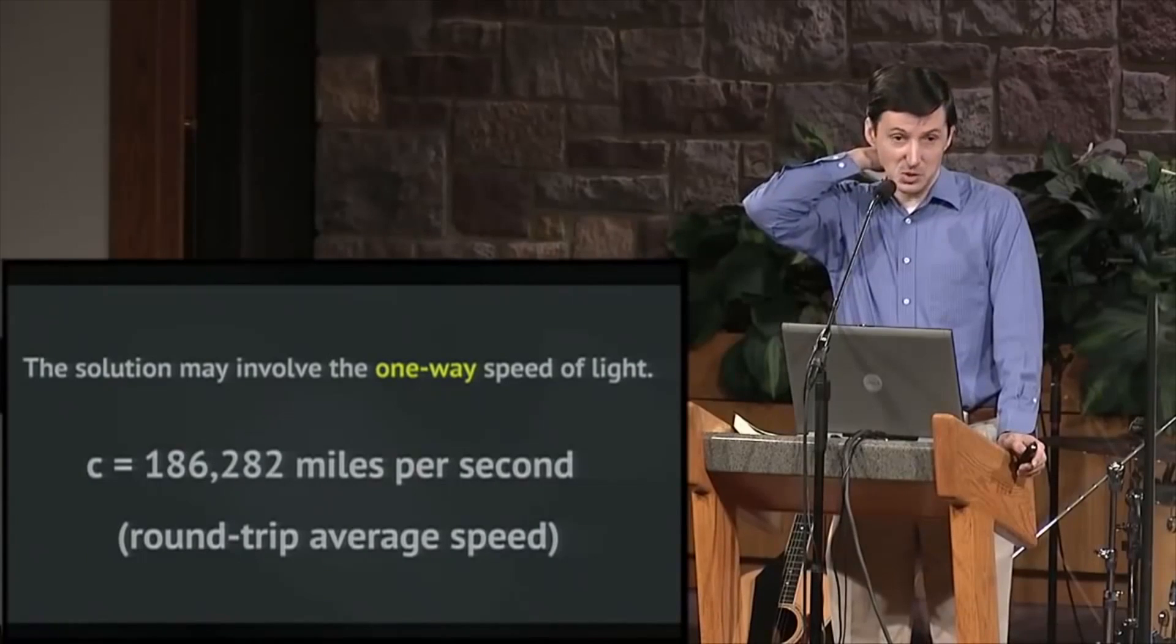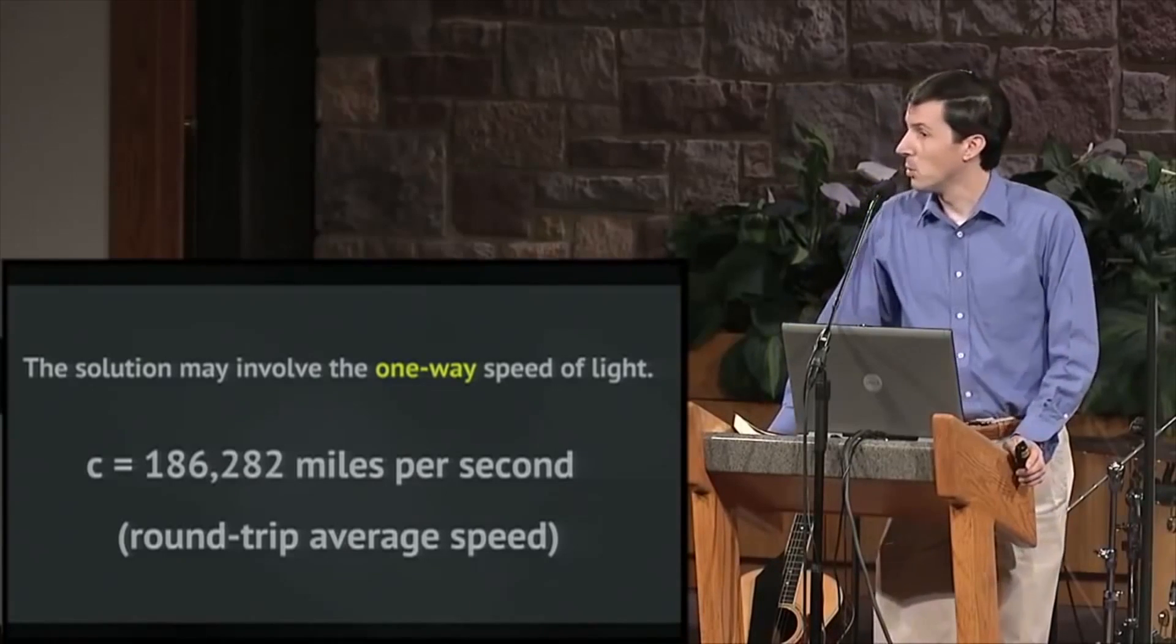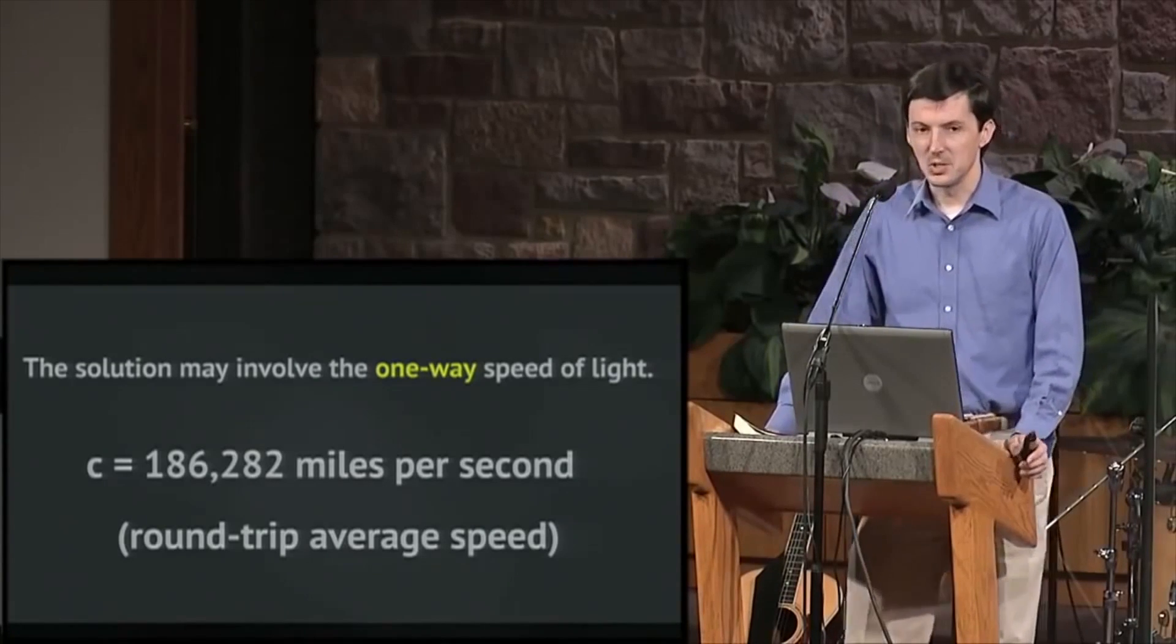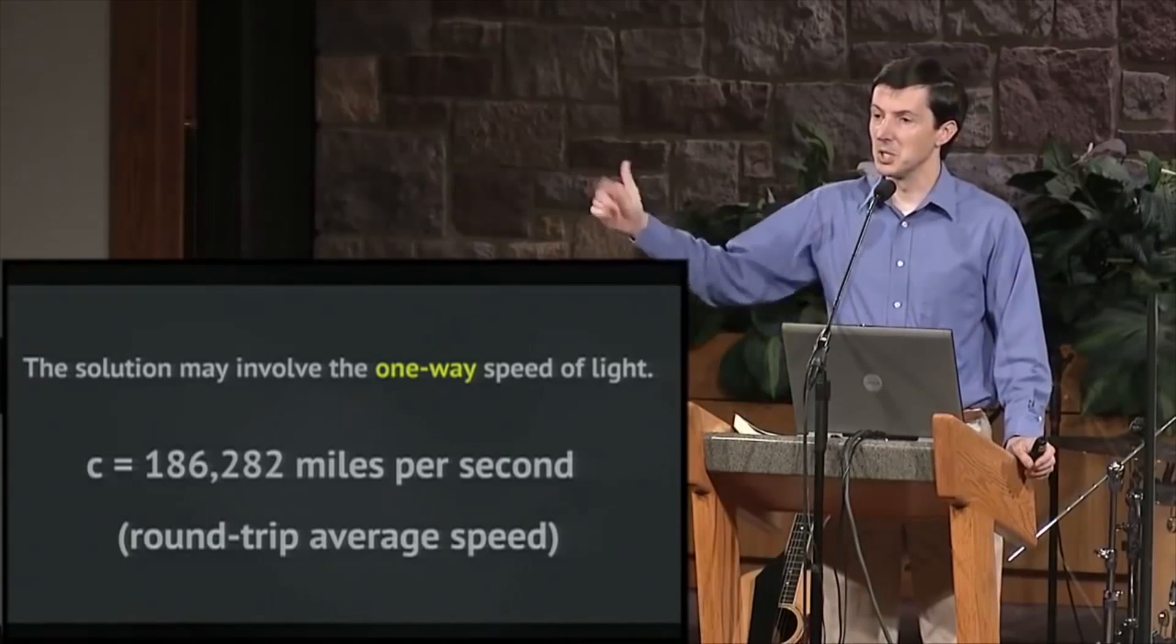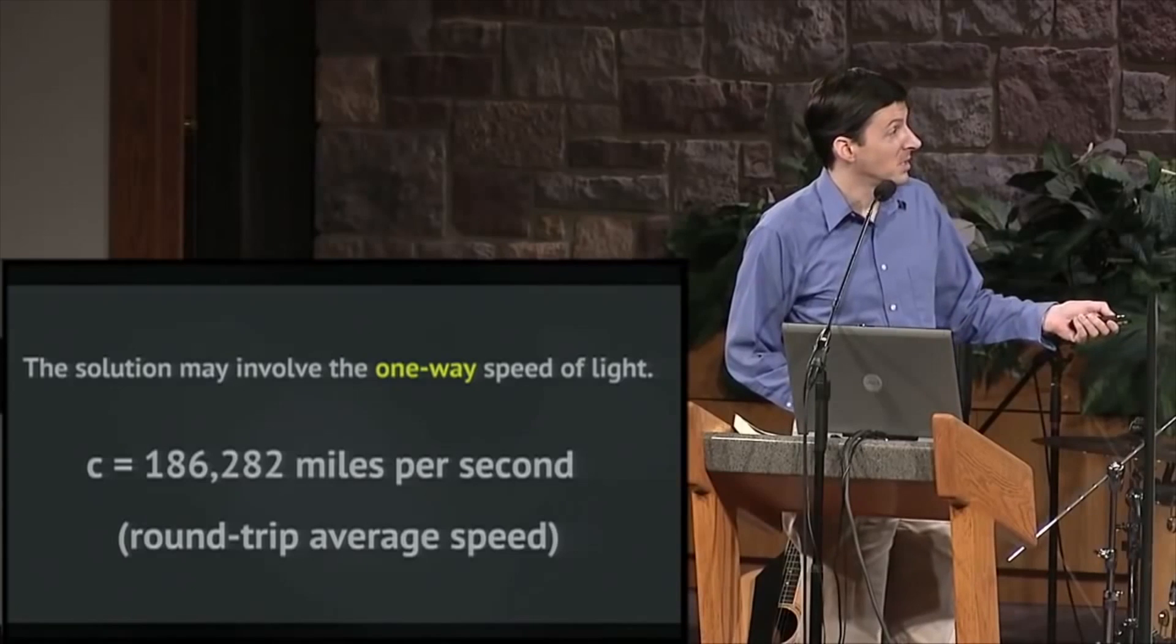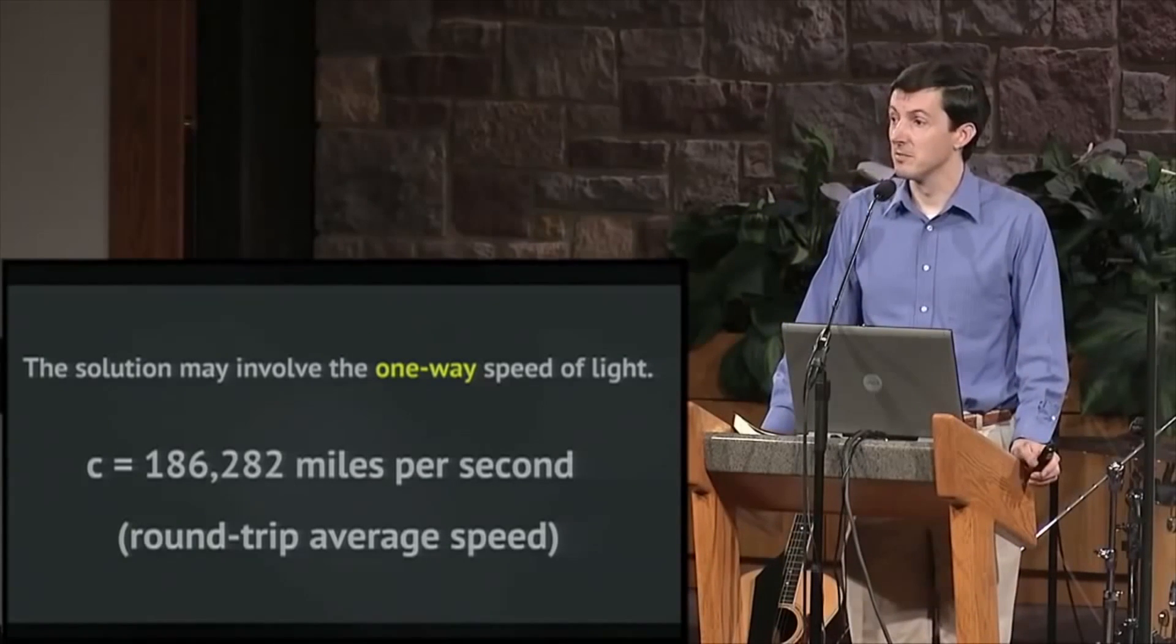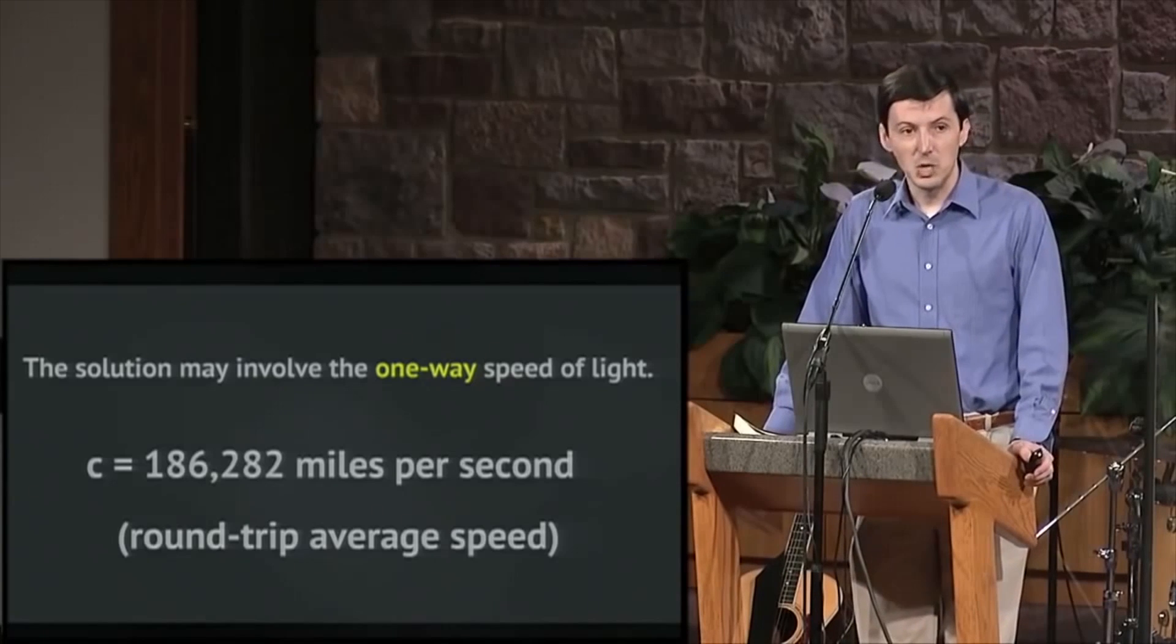I'm going to suggest that the solution may involve... I'm going to give you what I think the answer is. I think it involves the one-way speed of light. And that is the speed of light on a one-way trip, as opposed to bouncing out of a mirror, a two-way trip. The speed of light in vacuum is 186,282 miles per second. Very fast. But that is a round-trip average speed.